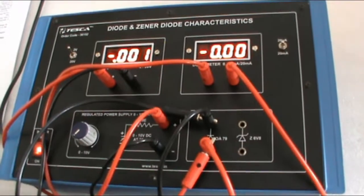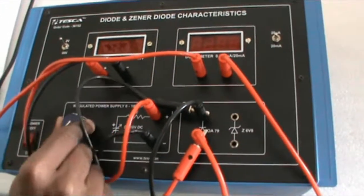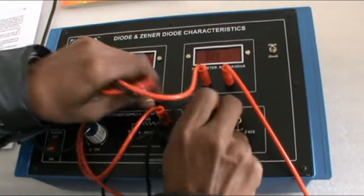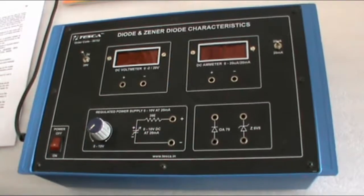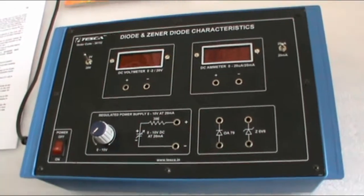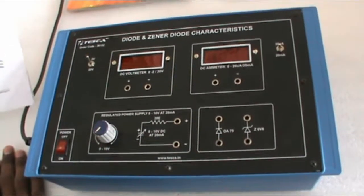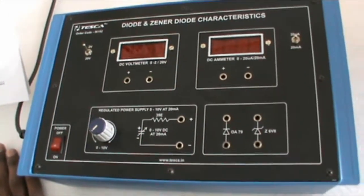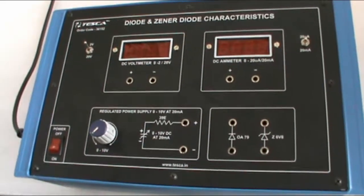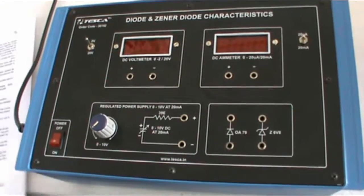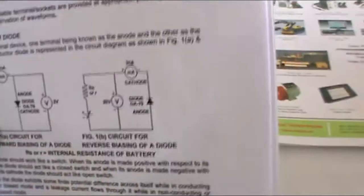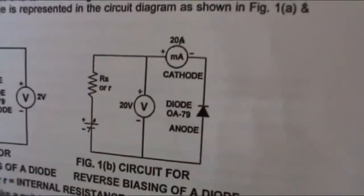Now for reverse bias characteristics, switch off the trainer and remove all previous connections. Follow the procedure for reverse bias characteristics of a Germanium semiconductor diode. Switch off the supply and reverse the connection of the diode as per figure 1B. With the help of figure 1B, we are going to make the circuit using patch cords.